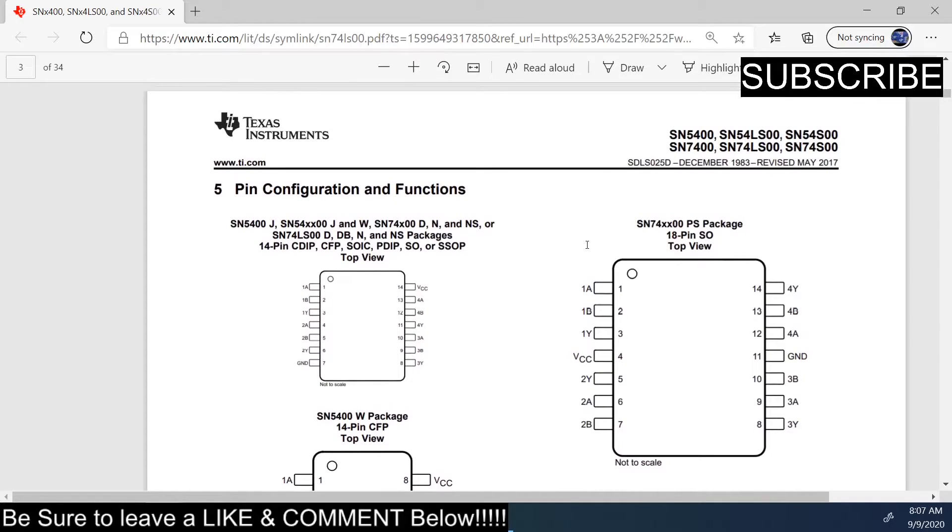You have VCC on pin 14, and pin 7 is your ground. So if I come back to this screen here, and I zoom this in, scroll down to that, I'll show you what I'm talking about with the pins. So if I come in here like this, so this will be my plus 5 volts, and this is my ground right here. So this group right here is a NAND gate. This group right here is a NAND gate. This group is a NAND gate, and this group is a NAND gate, so there's four NAND gates. So you would have 1 and 2 as your input, and 3 is your output. So that would be how the chip works.